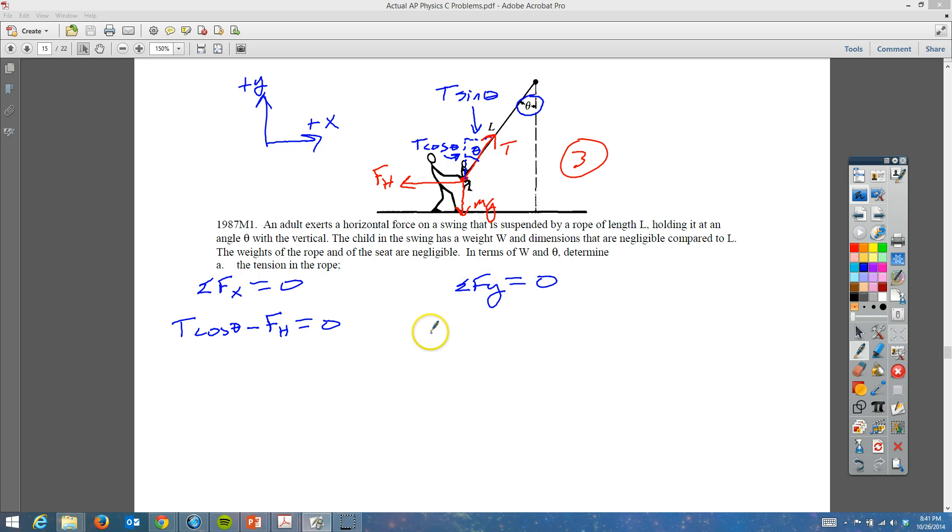If we're doing the X's, notice that we have T cosine of the angle minus FH is equal to zero. And on this side we're going to have - oops, I did that wrong. This is really not T cosine of the angle. This one is actually going in the X direction. We want T sine of the angle. Sorry about that. Minus FH is equal to zero.